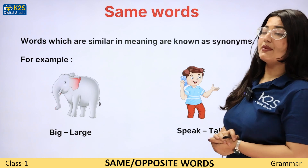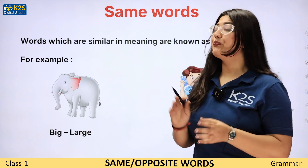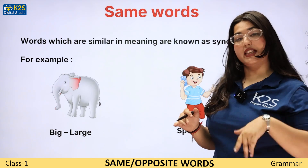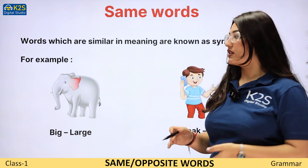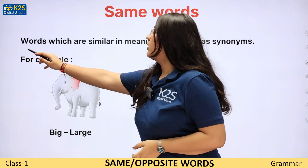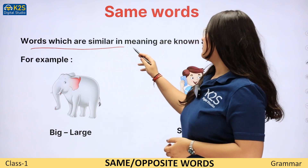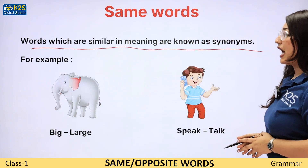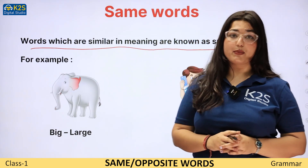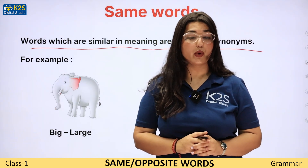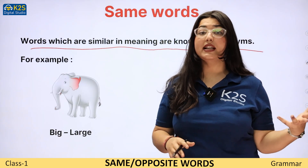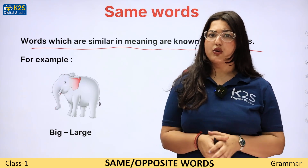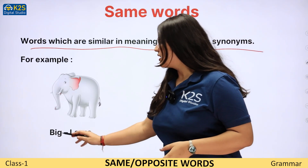Sab se pehle hum seekhenge same words ke baare mein, then opposite words. Words which are similar in meaning are known as synonyms. Jin words ka jo meaning same hota hai, un words ko hum bolte hain synonyms.